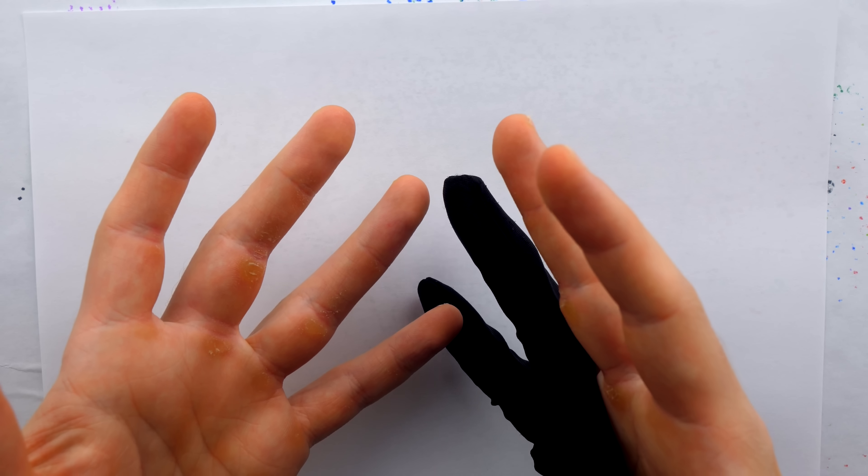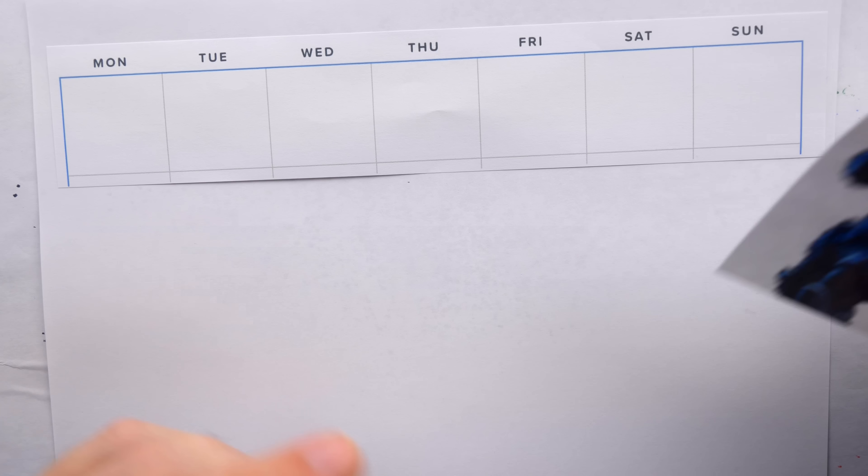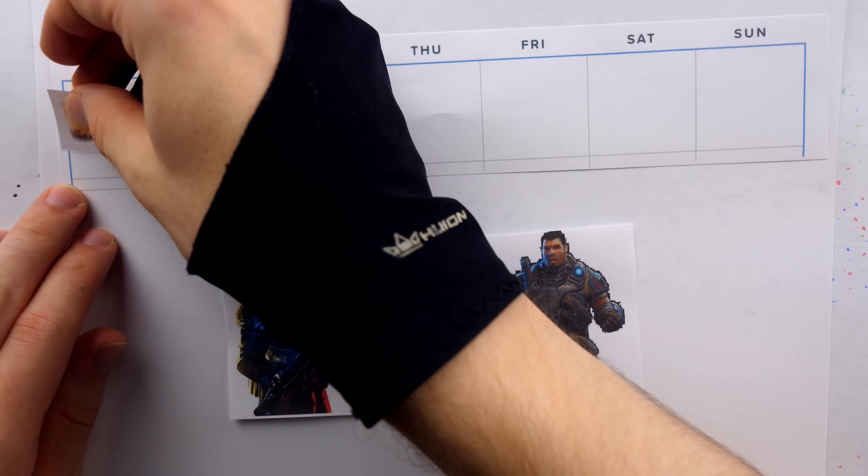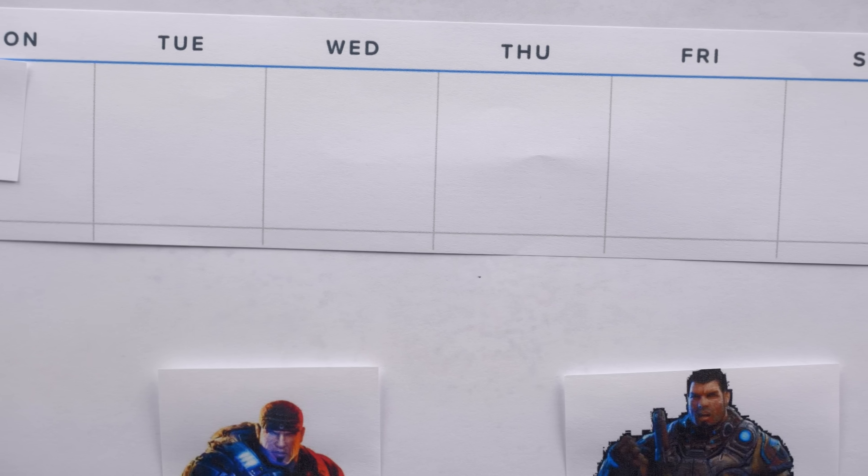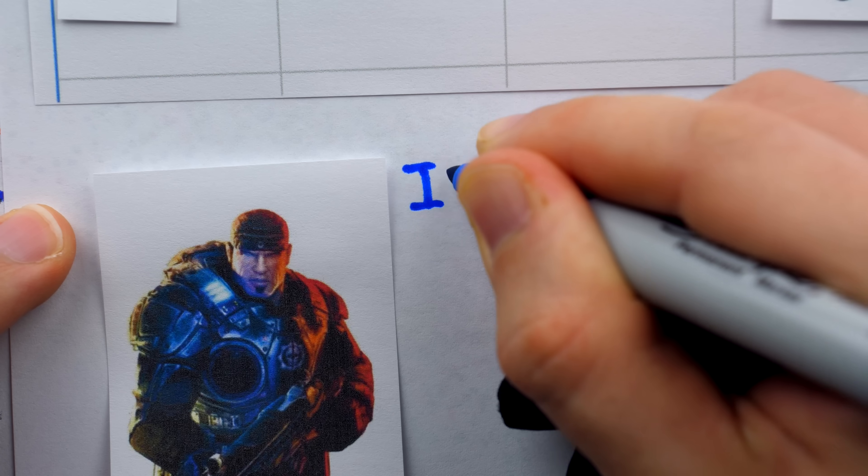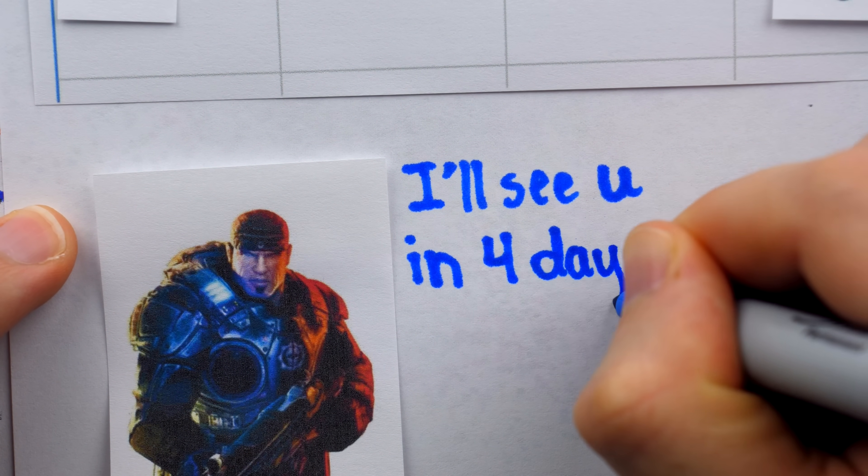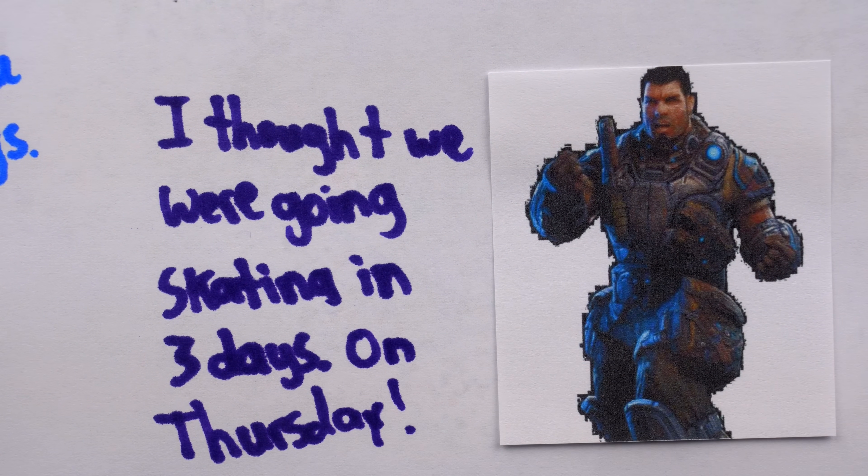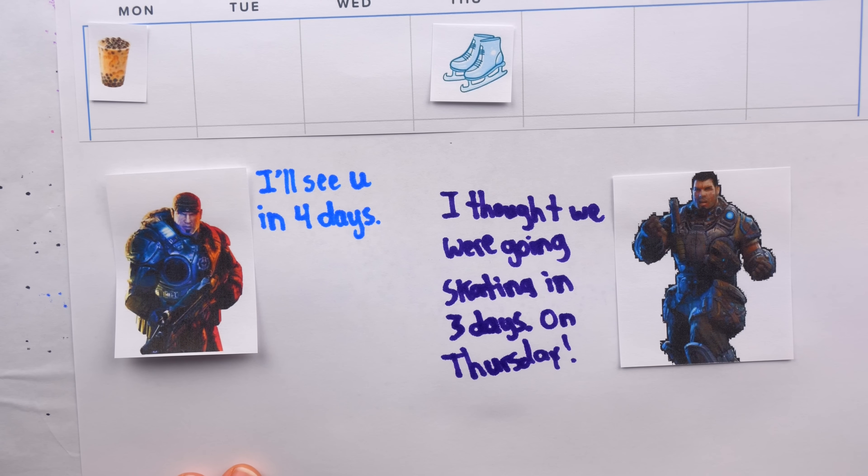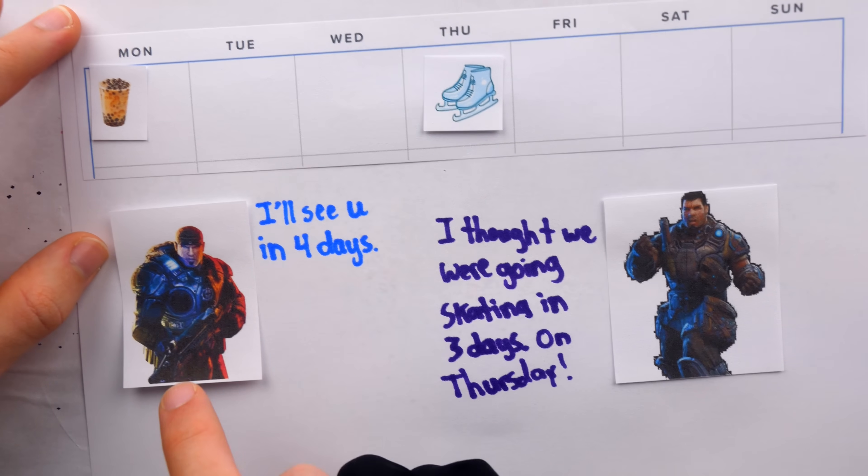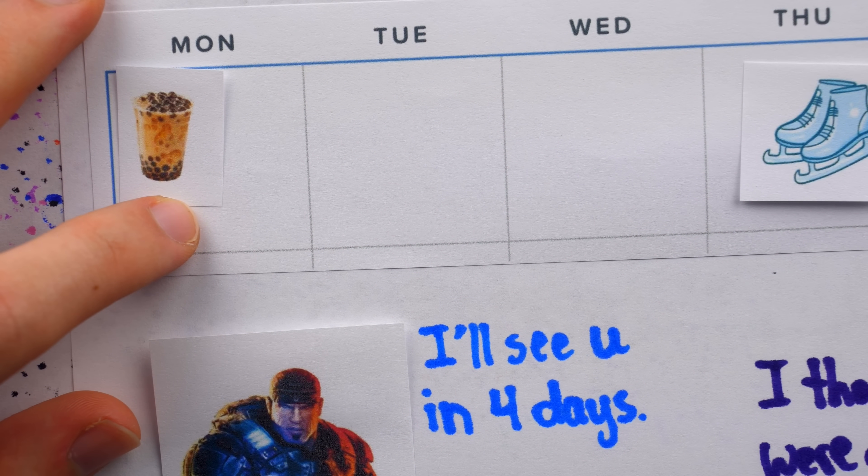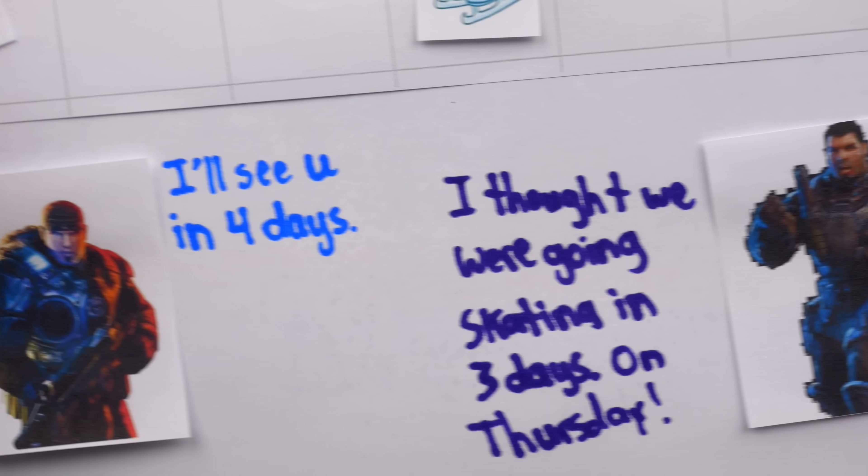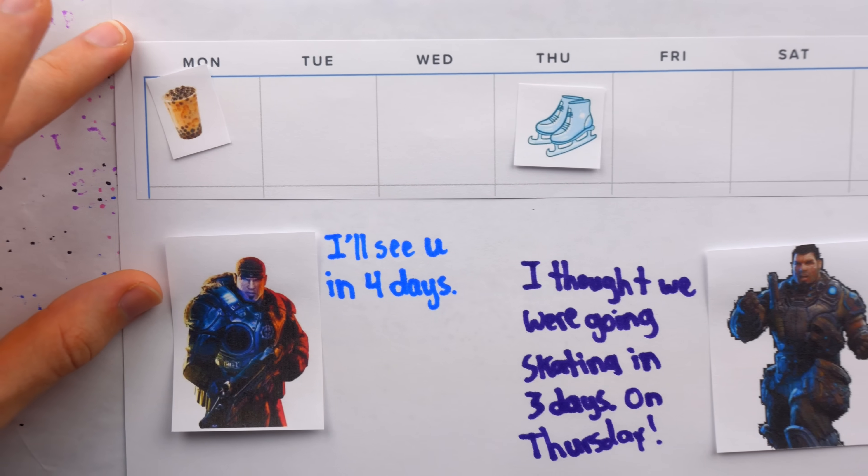Let's just finish with a couple more examples of how ordinary people, not just nerds, encounter the fence post error. So often, people disagree when describing days. Maybe Marcus and Dom are having boba tea together on Monday morning, and they plan to go ice skating on Thursday afternoon. Marcus confirms with Dom saying, I'll see you in four days. But Dom is confused and says, I thought we were going skating in three days on Thursday. Of course, they both know they're skating on Thursday, but they're counting their days differently. Marcus is counting the present day, which still needs to pass, one, two, three, four days. But Dom is not. A classic case of the fence post error.